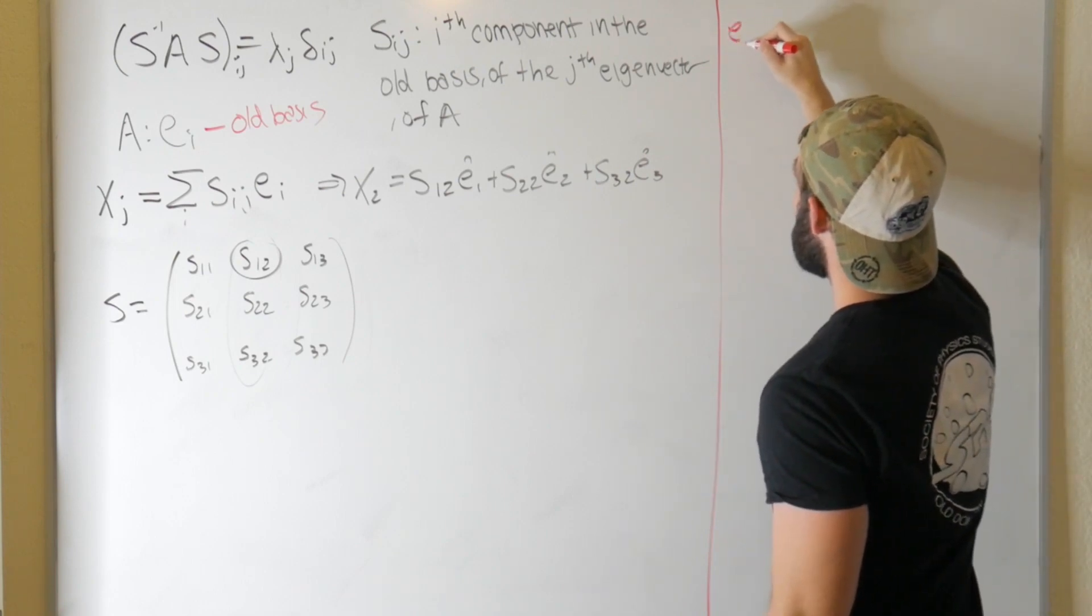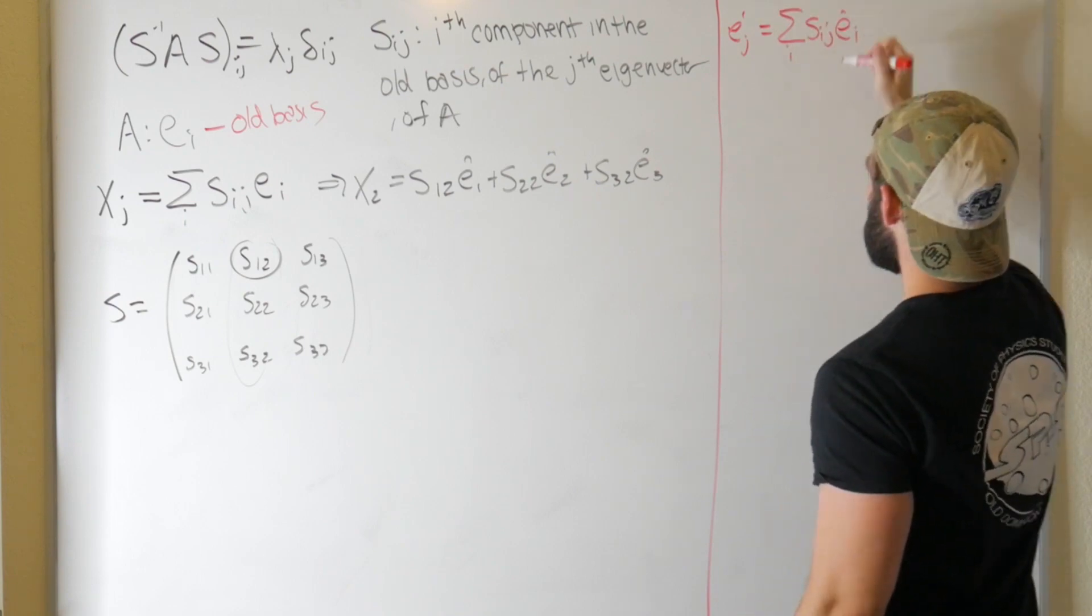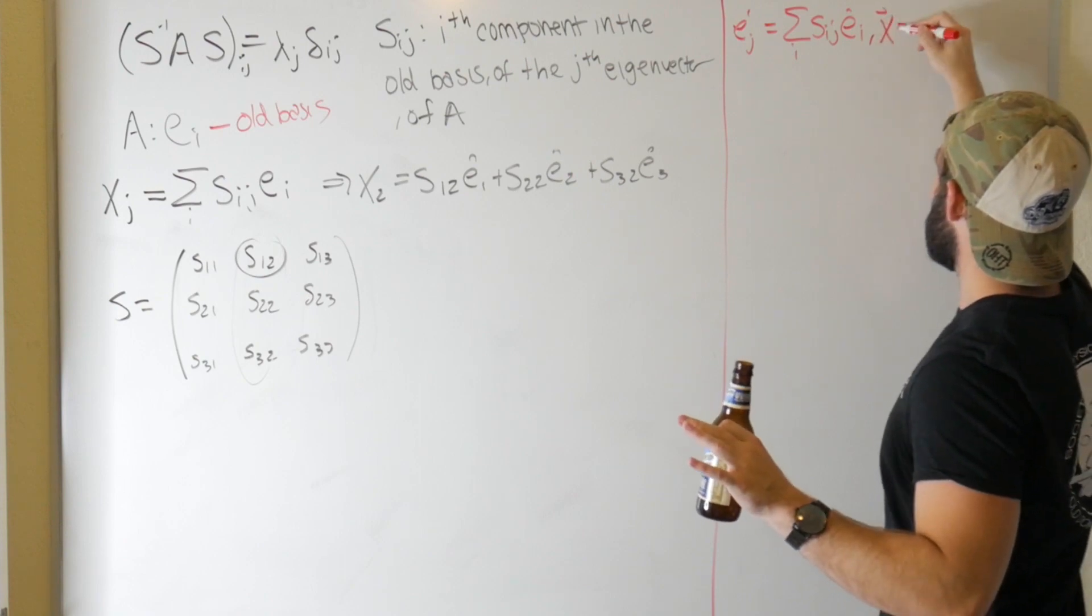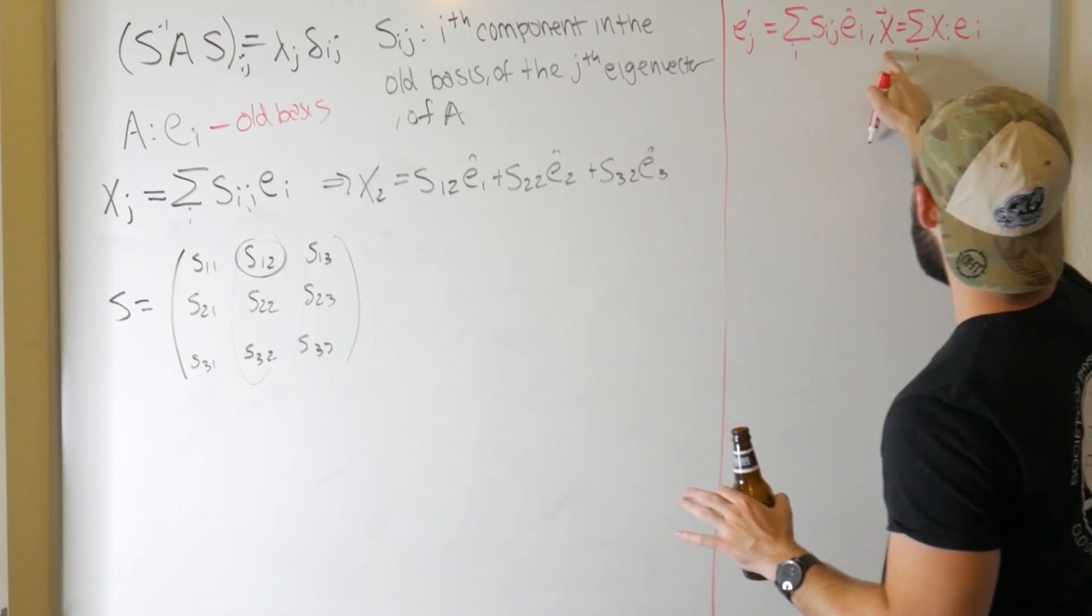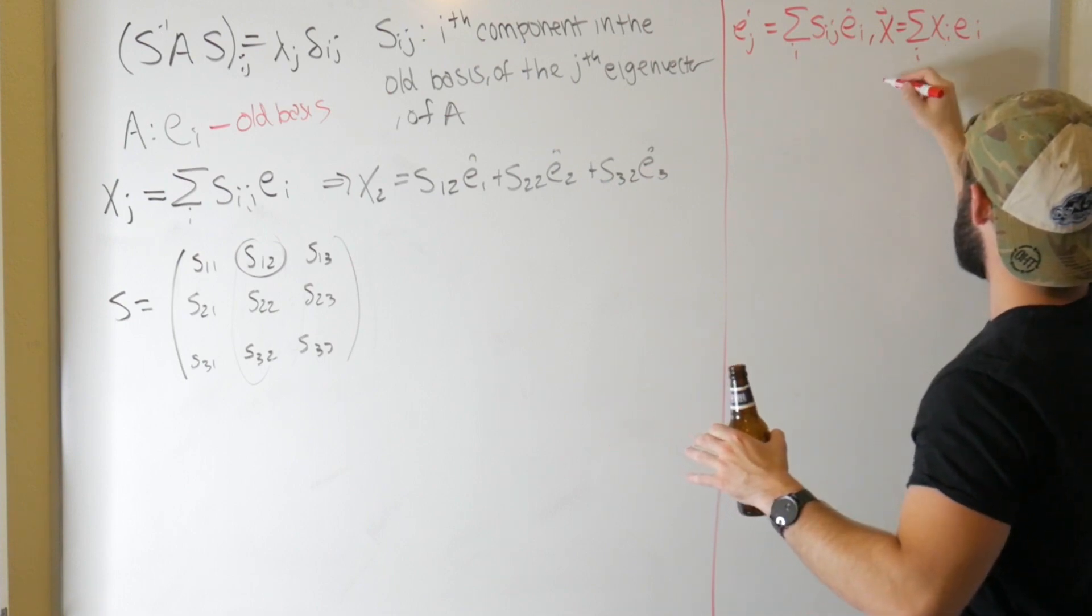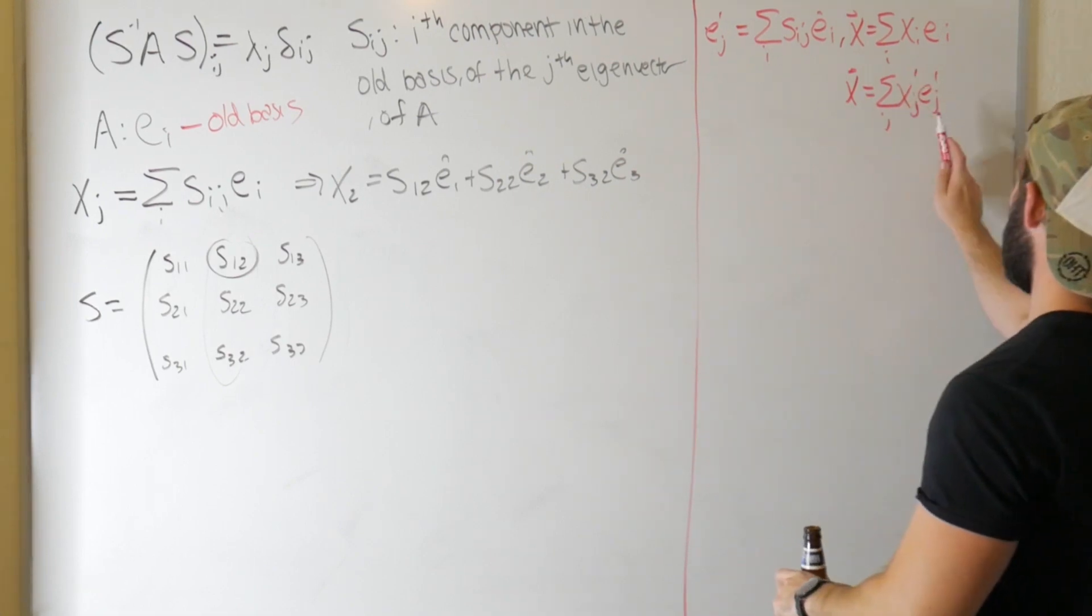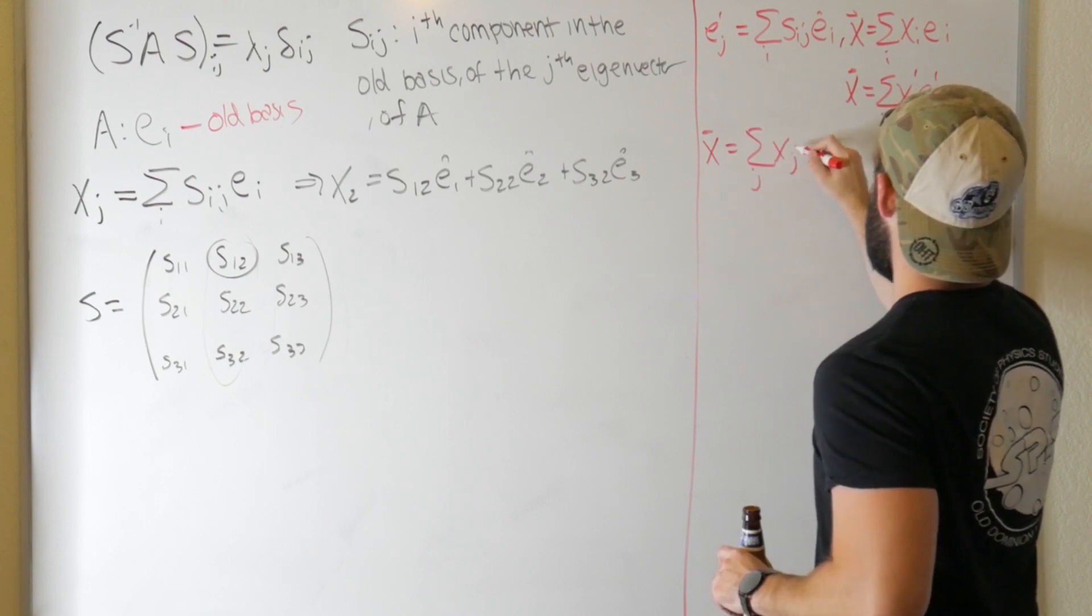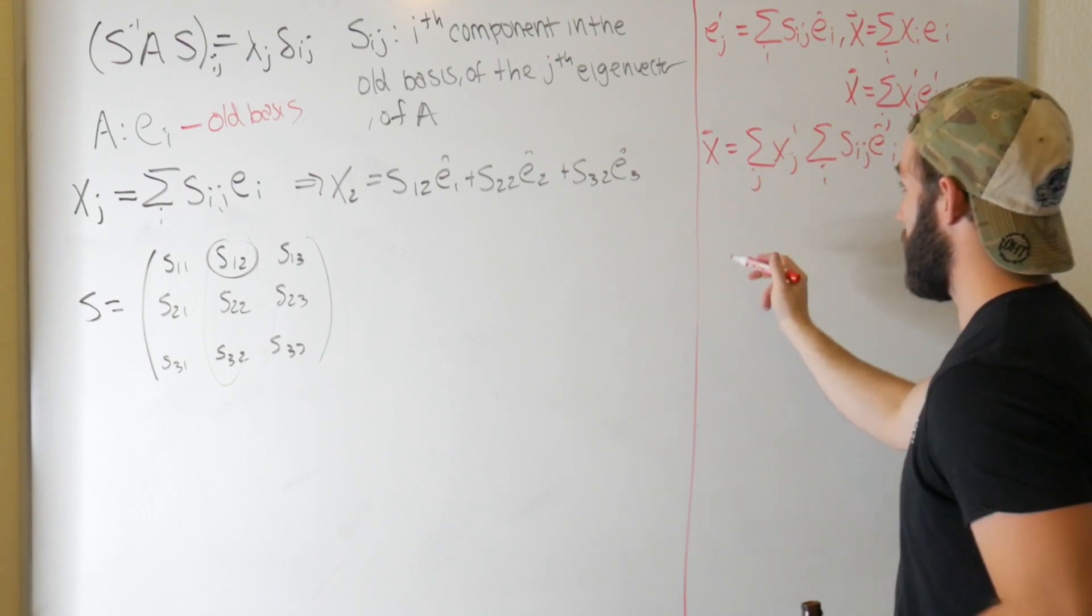But we can define some new basis vectors, say E sub j prime equal to a linear combination, sum over i, Sij Ei. But we can also construct any regular vector as a linear combination of its basis vectors. So, in other words, x, sum vector x, is just a sum over i of xi E sub i. But if we were to change basis, that x could still be characterized by a linear combination of its new basis vectors. The coefficients in the front probably won't be the same, but you can still do it nonetheless. In other words, x could be written as a sum over j of xj prime E sub j prime. But if we just substitute in our definition of E sub j prime, we get that x is equal to the sum over j xj prime and then the sum over i Sij Ei. And then we can pick out a component if we want of x, say we want the i-th component.